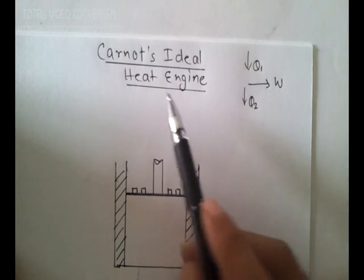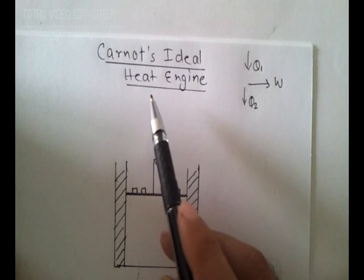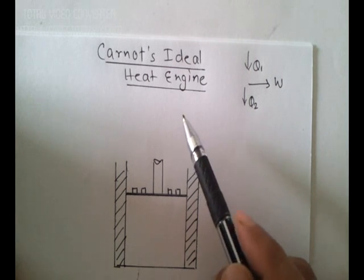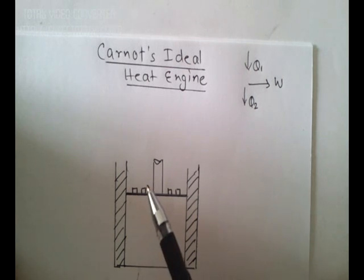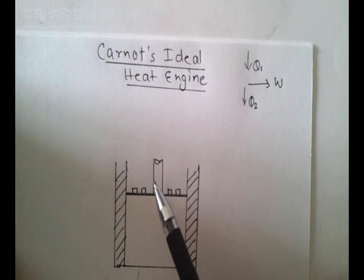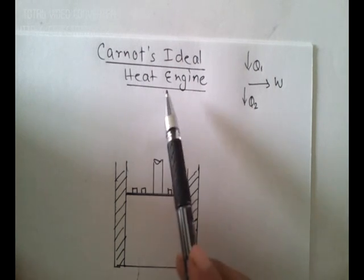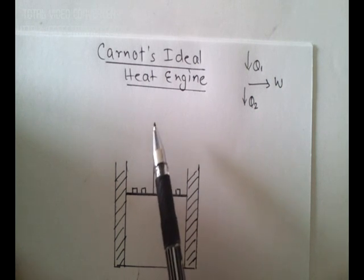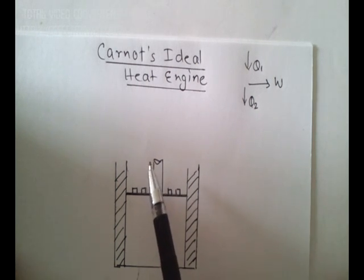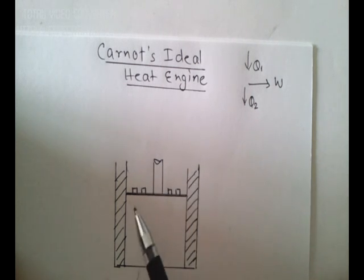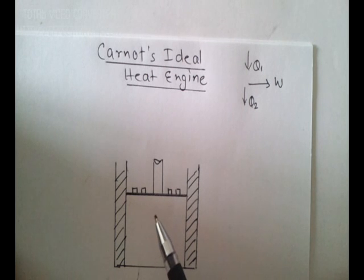Carnot was a French scientist who proposed an ideal heat engine. It was a plan he proposed as to what are the various parts of an ideal heat engine, and he proposed a thermodynamic cycle for the same. Of course it's not possible to actually make an engine based on Carnot's ideal cycle, but it is a good reference point and a good starting point to design heat engines. In this video we will look at the various parts of a Carnot heat engine and the thermodynamic cycle that he proposed.